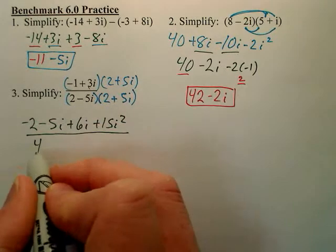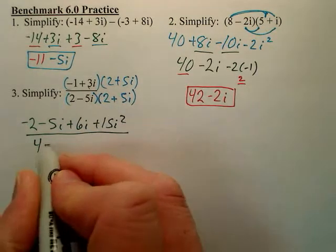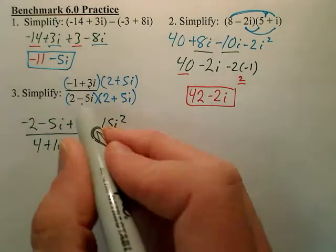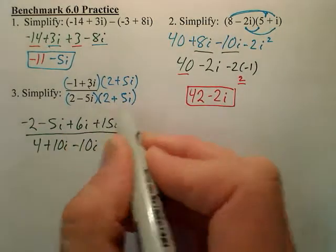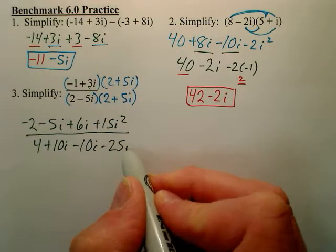And then 2 times 2 is 4, plus 10i, minus 10i, minus 25i squared.